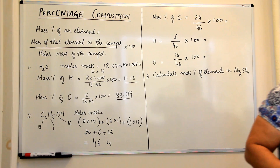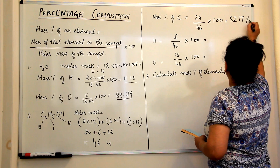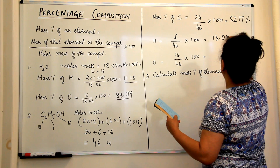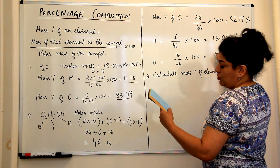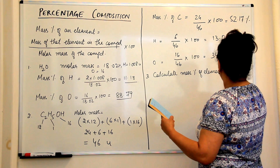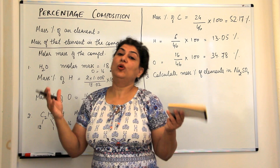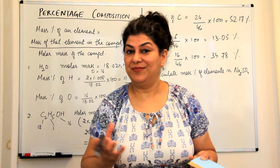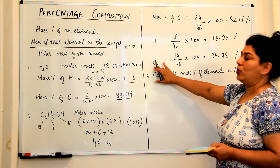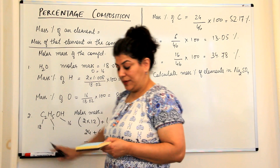Carbon is 52.17%, hydrogen is 13.05% (slightly adjusted for rounding since we ignored decimal places), and oxygen is 34.78%. When you add the mass percentages of all elements, the total should always equal 100%. So ethanol contains 52.17% carbon, 13.05% hydrogen, and 34.78% oxygen.